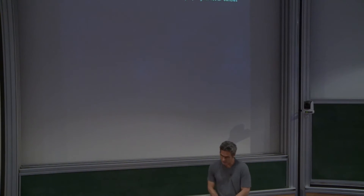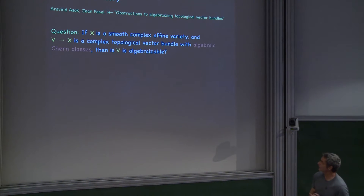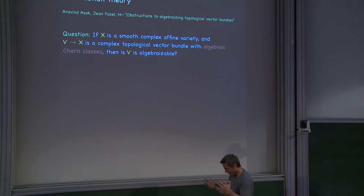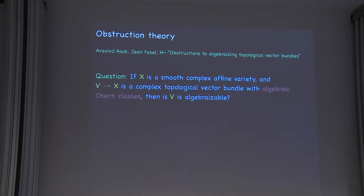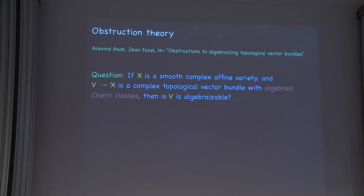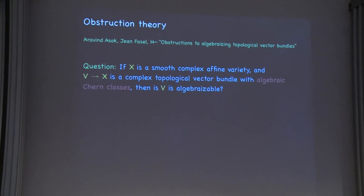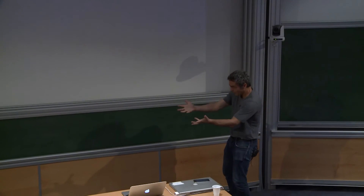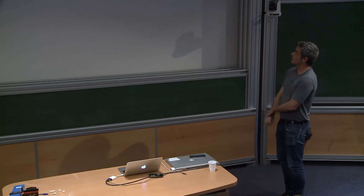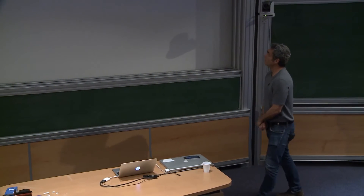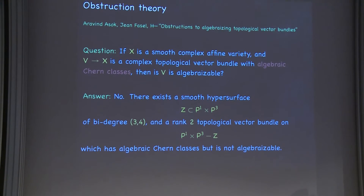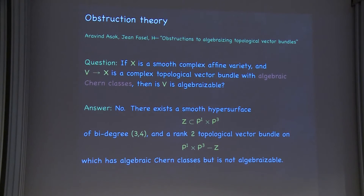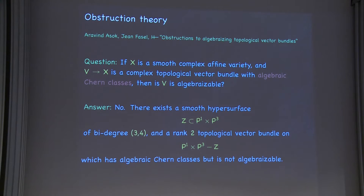Morel, Asak, and Fasel investigated problems of splitting free summands off of projective modules over regular rings in low Krull dimension using these methods. Jean, Aravind, and I produced an example of a smooth hypersurface in P¹ × P³ for which the complement has algebraic Chern classes, but it's not algebraizable. I think it would be really interesting to see, from the point of view of value distribution theory, why this rank-two bundle doesn't have an algebraic structure. If you make the rank big enough, I think it becomes algebraizable — it's important that it's two-dimensional.